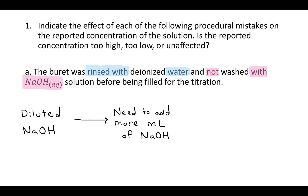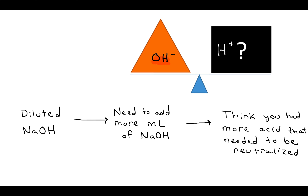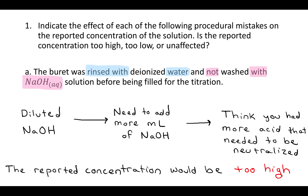That means that you'll have to add more of it to neutralize the acid in the analyte. So if you add more of that, you're going to think that you actually had more acid that needed to be neutralized, because you're not taking that dilution into account — you're assuming it's not diluted when it actually is. In a titration, the endpoint is when you assume that the amount of hydroxide and the amount of H-plus are the same. So if you had to add more sodium hydroxide, you would assume you had more acid, and the reported concentration would be too high.